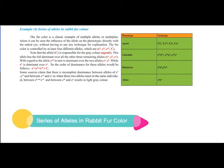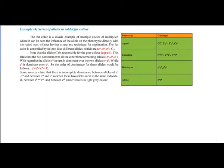Fur color in rabbits is a classic example of multiple alleles, as previously studied with blood groups. Another example is the series of alleles controlling rabbit fur color, where the influence of the allele on the phenotype can be observed directly with the naked eye, without requiring any special technique for explanation.